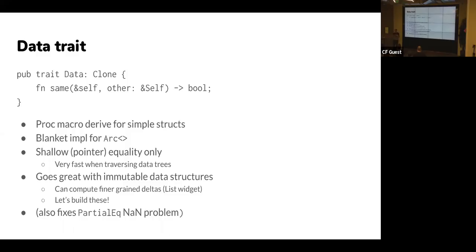It's an approximate equal — it might say 'these are different' and that's okay, you just go a little deeper into the widget tree. This would be annoying to implement yourself, so we have a proc macro that derives it for simple structs. If you have more complex state, you can wrap it in an Arc and it just works — there's a blanket impl for it. Going forward as we explore deeper applications, we want to use immutable data structures from the functional programming world. There's also a system called Loglet in C++ that we want to adapt, and these immutable data structures will very easily implement this Data trait.